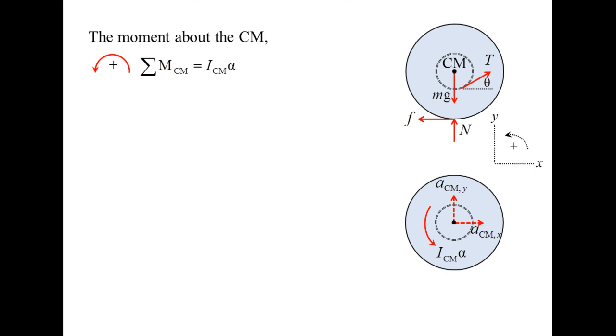For the moment equation, the moment of inertia about the center of mass, ICM, is the mass times the radius of gyration squared.